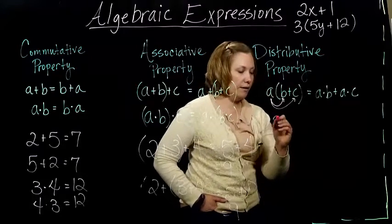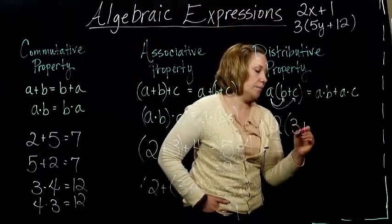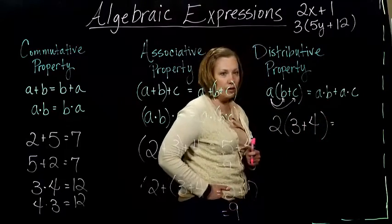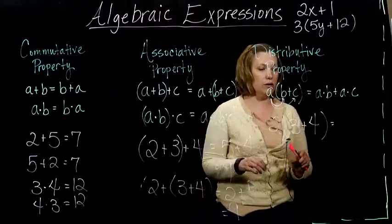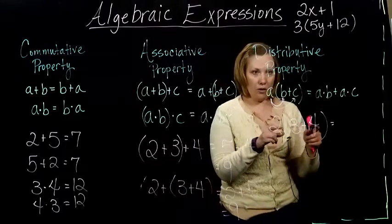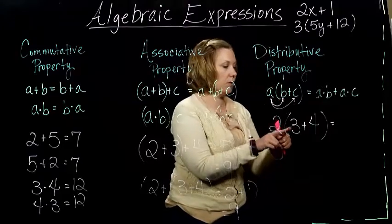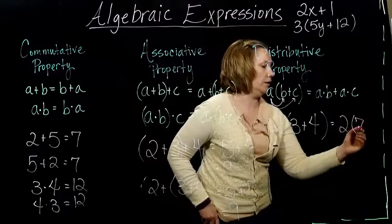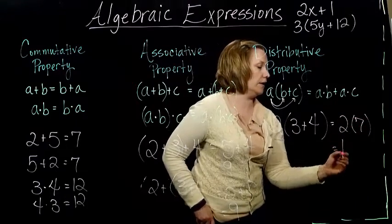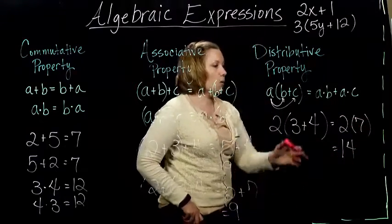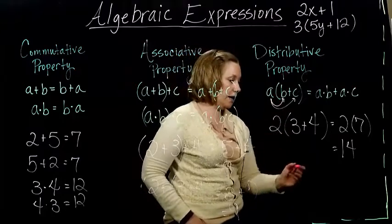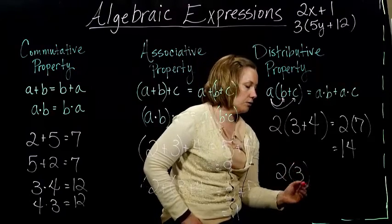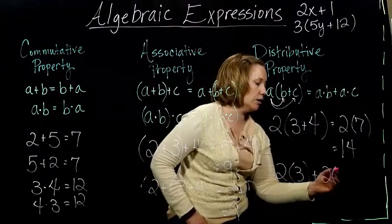Which sounds really confusing, but if we put it in with numbers, I think it will make sense to you. So normally we'd follow the order of operations for this. So we do the 3 plus the 4, which would give me 7. And then 2 times 7 gives me 14. But what this distributive property says is that we should get the same answer if we do 2 times 3 plus 2 times 4.